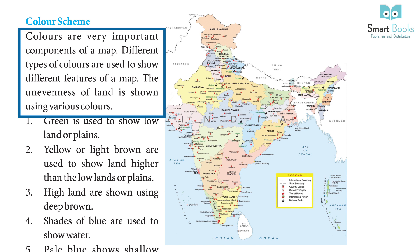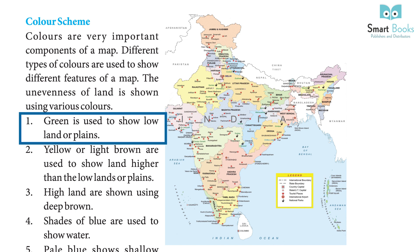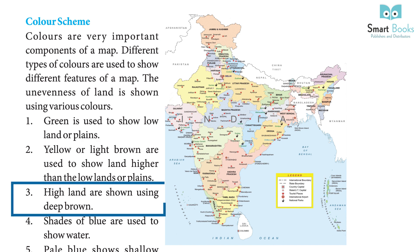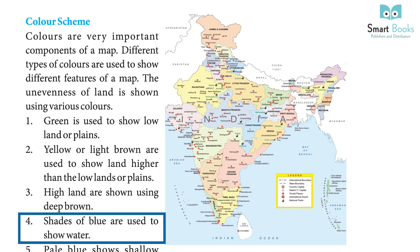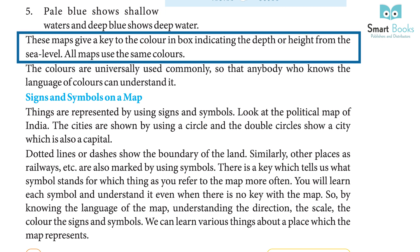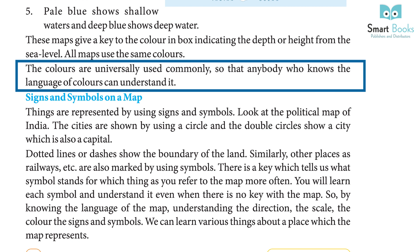Color scheme: colors are very important components of a map. Different colors show different features. Green is used to show lowland or plains; yellow or light brown shows land higher than lowlands; deep brown shows highlands; shades of blue show water — pale blue for shallow waters and deep blue for deep water. These maps provide a key to the colors indicating the depth or height from sea level. Colors are universally used so that anyone who knows the language of colors can understand the map.